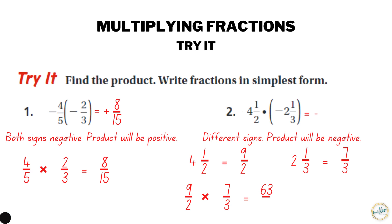Now set up the multiplication: nine-halves times seven-thirds. Multiply nine times seven to get sixty-three, and two times three to get six. That can be simplified — divide the top and bottom both by three: sixty-three divided by three is twenty-one, six divided by three is two. That can be simplified further by changing it into a mixed number: twenty-one halves equals ten and one-half. The answer is negative ten and one-half.